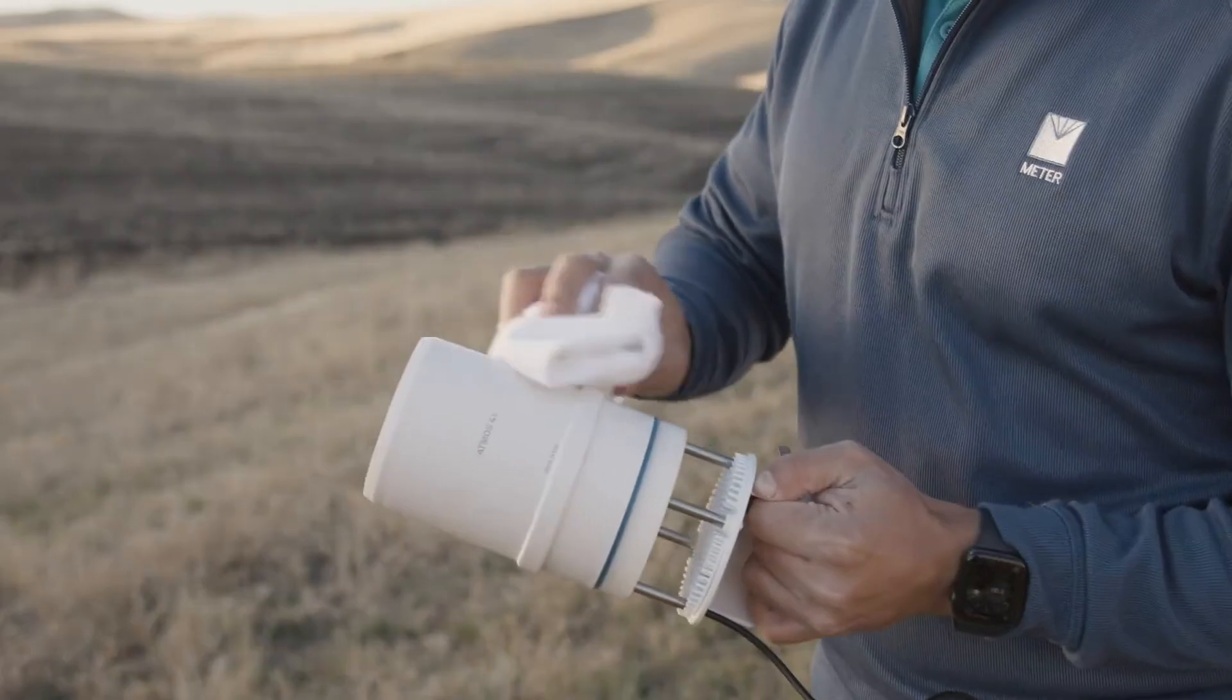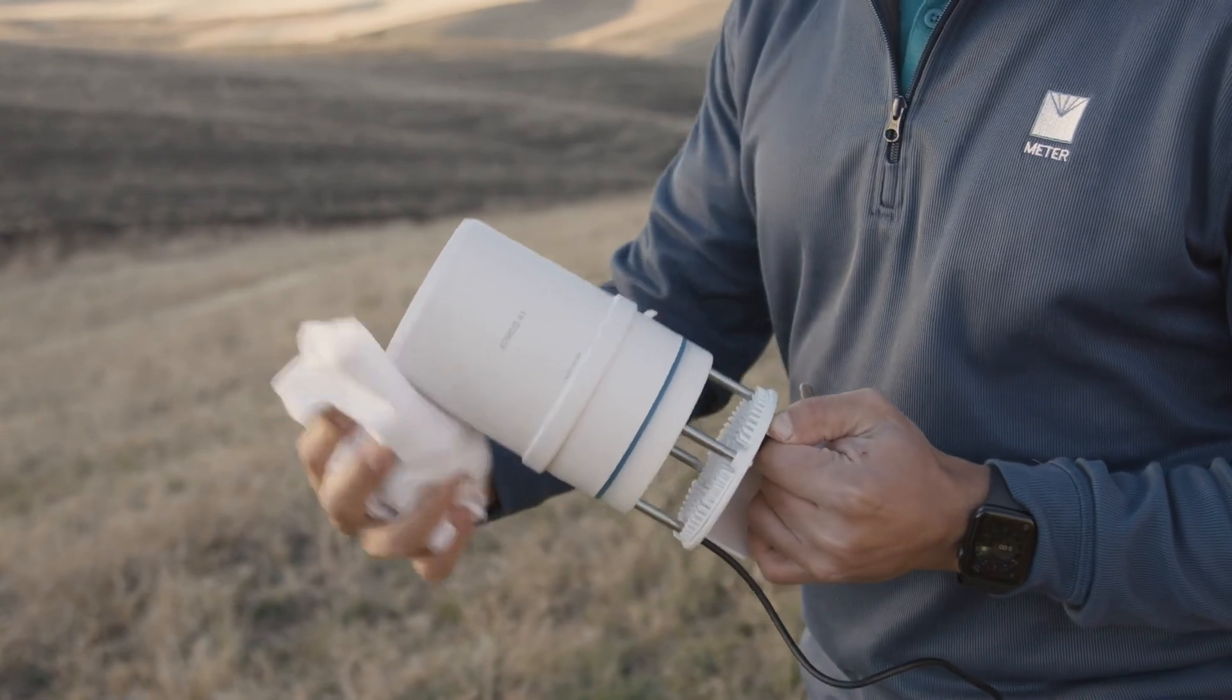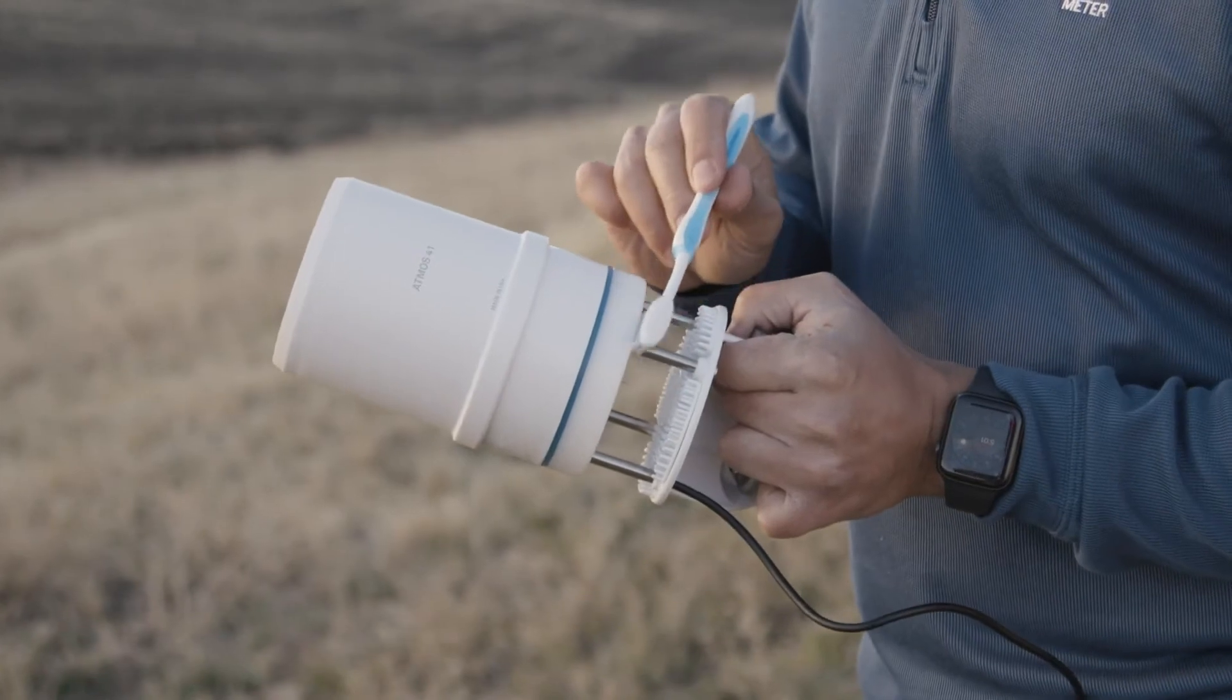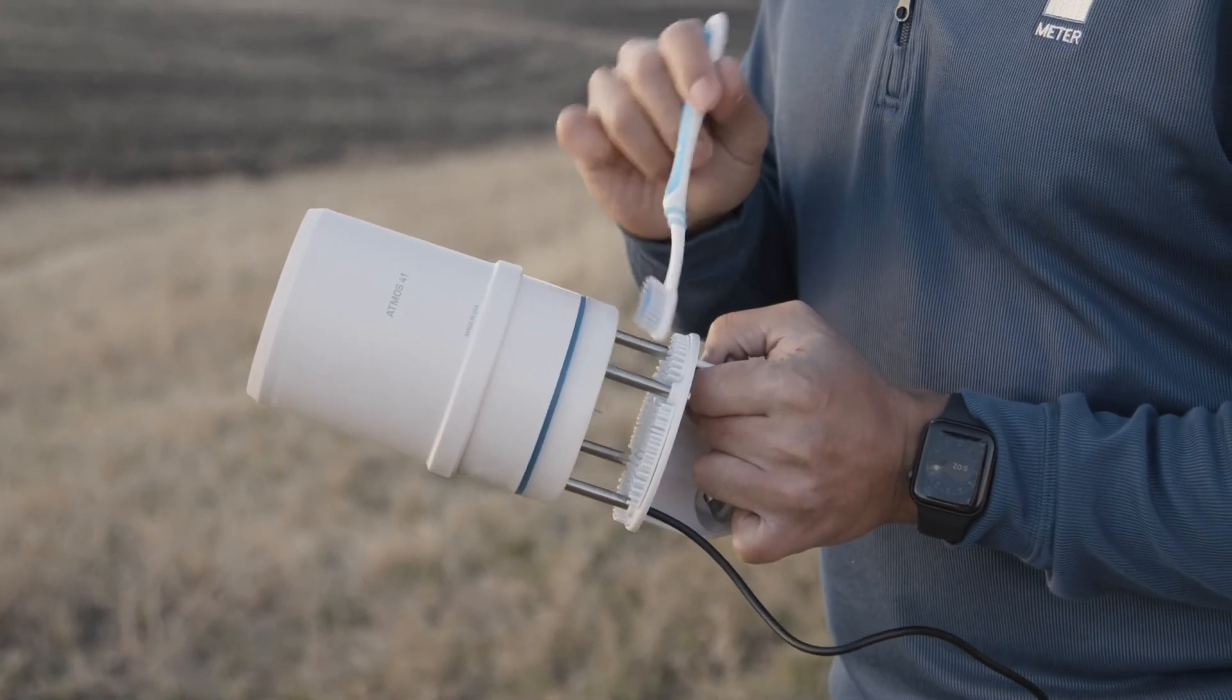To clean the Atmos 41 body, scrub the Atmos 41 body with light to medium pressure using a damp cloth. A warm damp cloth is best. Do not immerse the sensor suite in water. Clean around posts and between crevices using a dry brush.